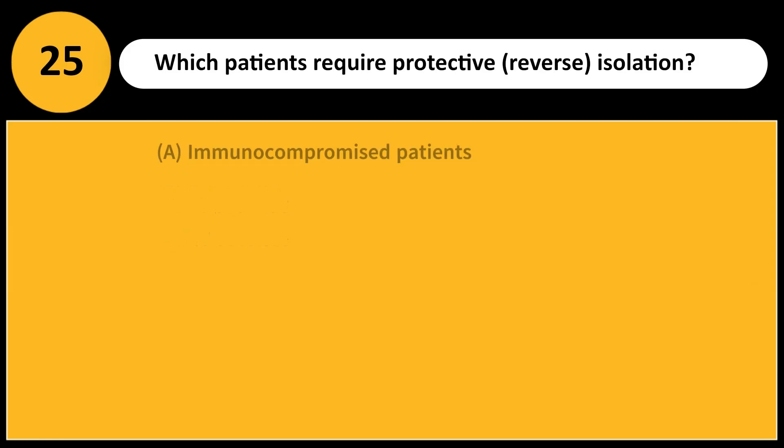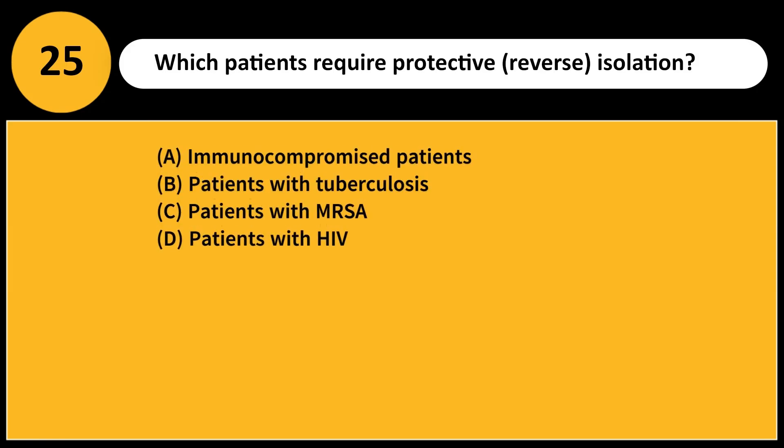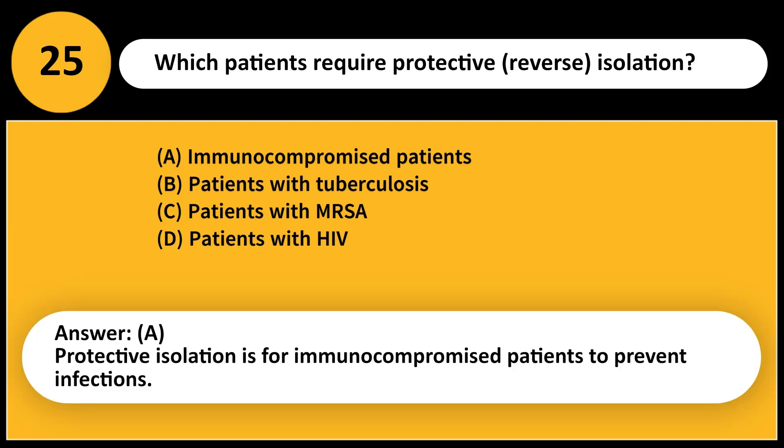Which patients require protective (reverse) isolation? A. Immunocompromised patients. B. Patients with tuberculosis. C. Patients with MRSA. D. Patients with HIV. Answer: A. Protective isolation is for immunocompromised patients to prevent infections.